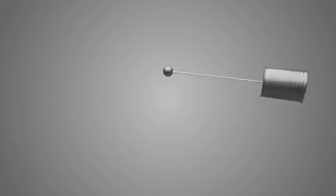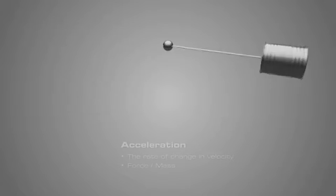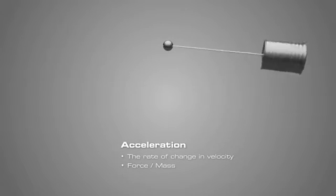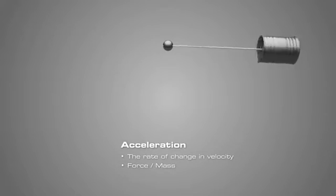Imagine swinging a rope around in a circle with a can attached to the end. The can is in a constant state of acceleration since its velocity is constantly changing due to its circular path.